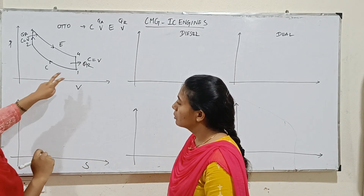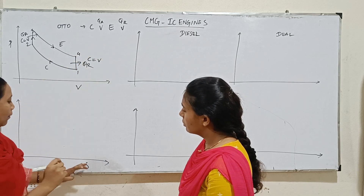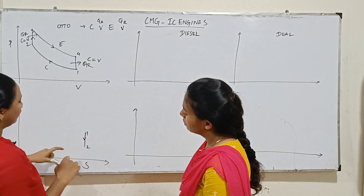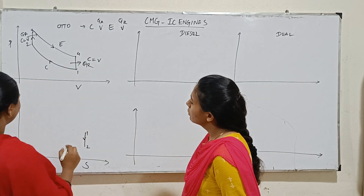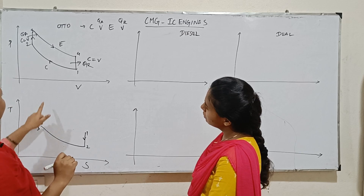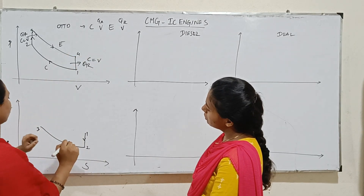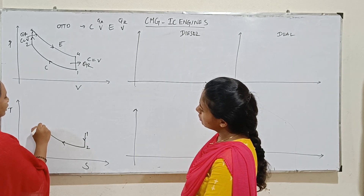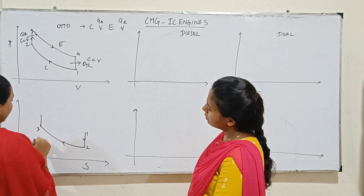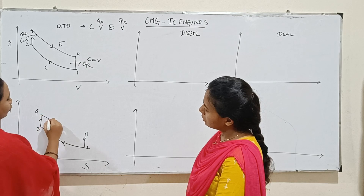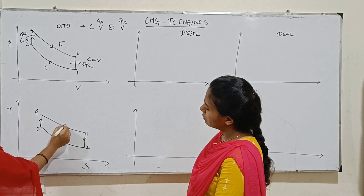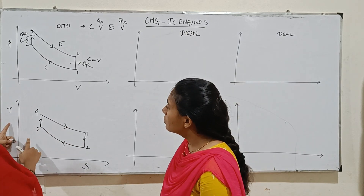For the TS diagram: first is isentropic compression, entropy is constant from 1 to 2. Then constant volume heat addition from 2 to 3. Then from 3 to 4 is isentropic expansion, entropy is constant. From 4 to 1 is heat rejection — pressure is proportional to temperature, and temperature is lower.